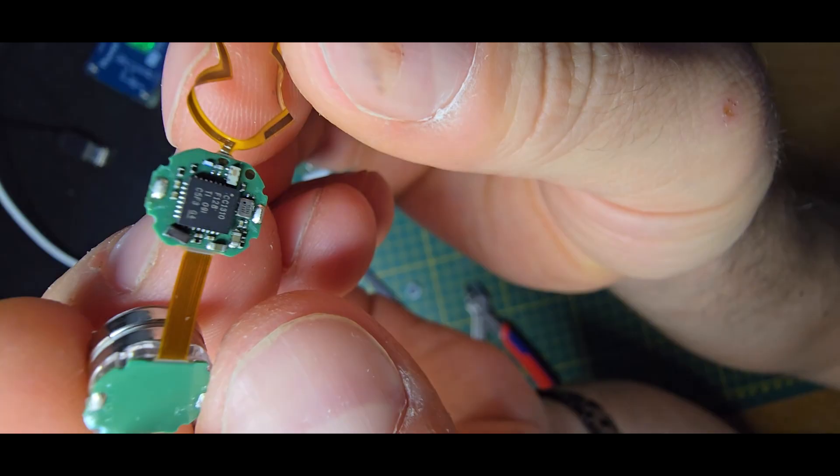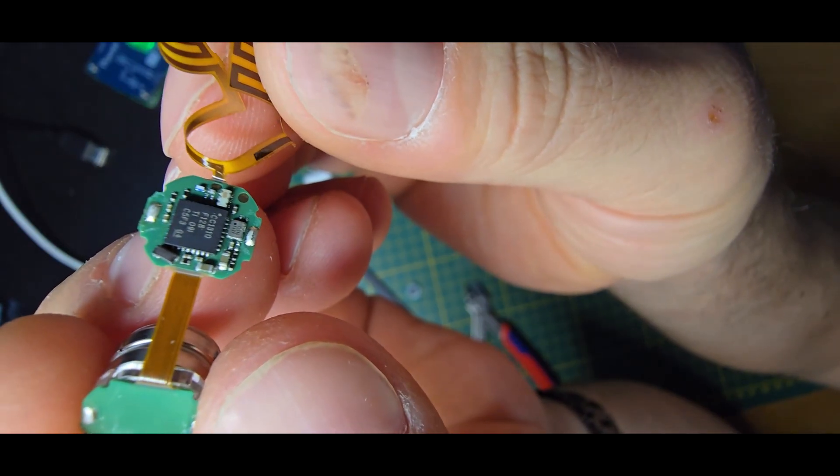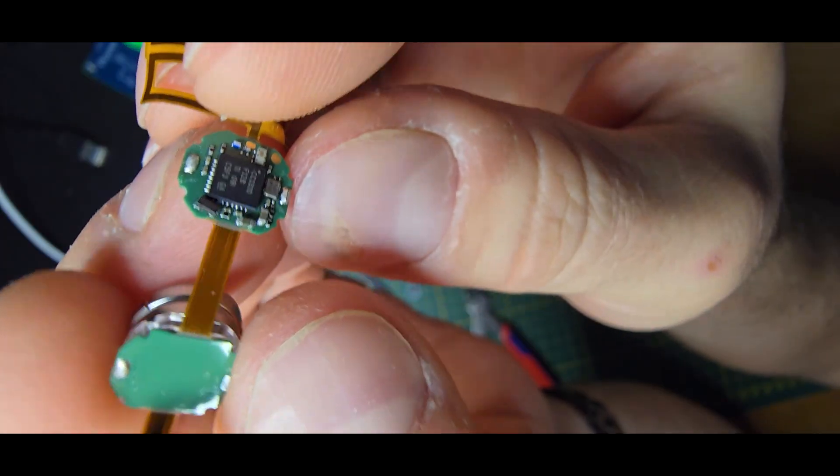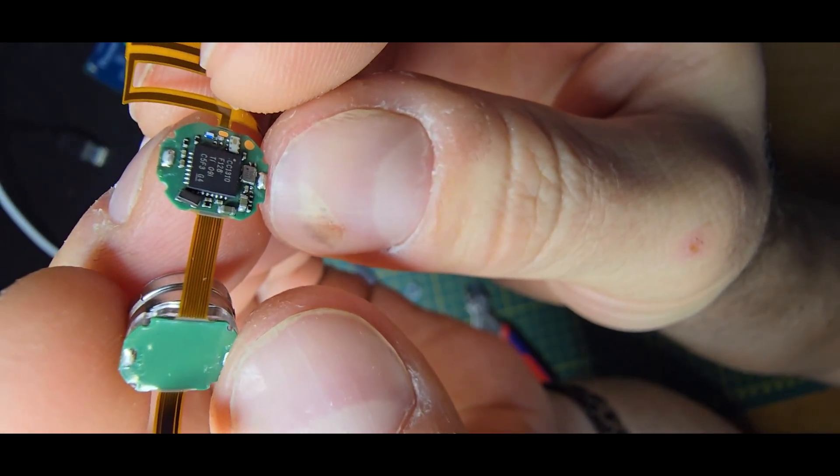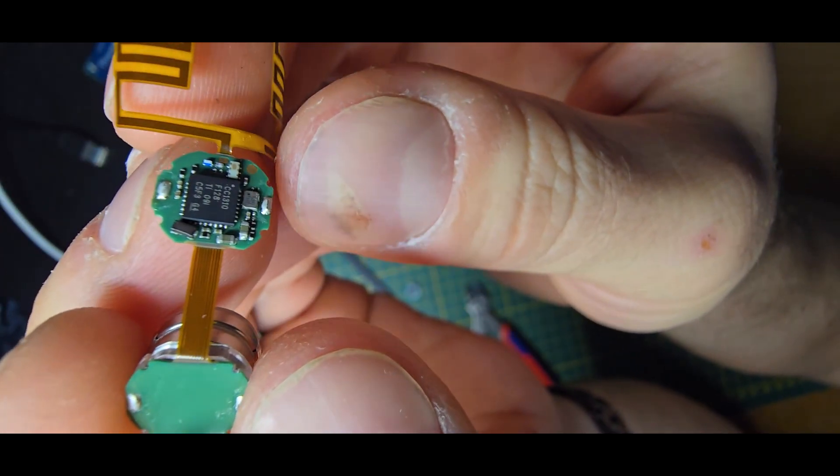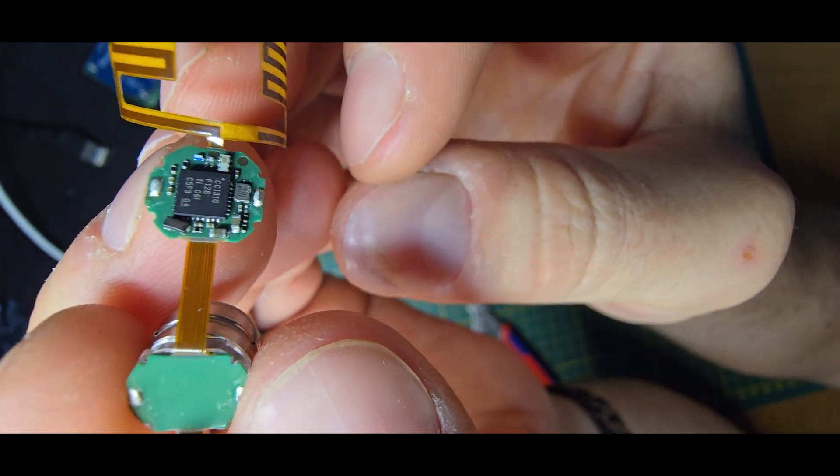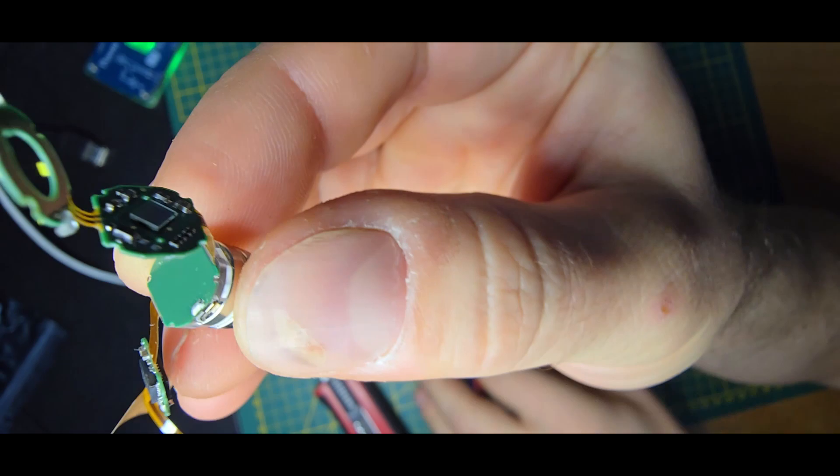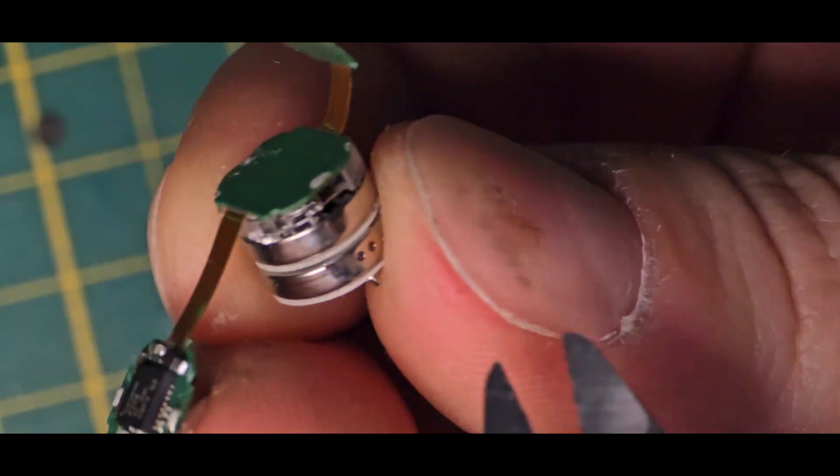The CC1310 is the RF chip, and this is also like sub gigahertz, so somewhere around 400 to 900 megahertz. And yeah let's also open this PCB up. And zoom in again to make it simpler.